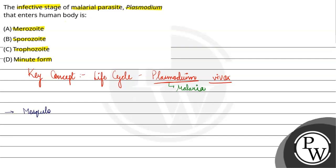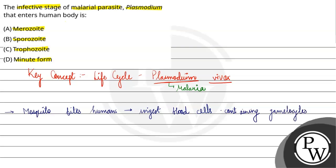The first step is when the mosquito bites the human. While biting, it will ingest the blood cells, and these blood cells will contain the gametocytes. Secondly, the mosquito will digest the blood cells — so the blood cells are digested.